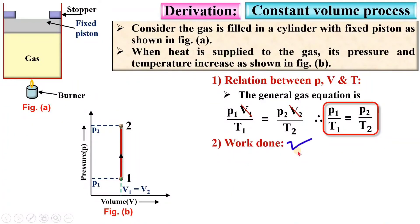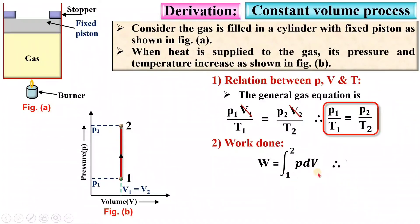The second term is work done during the constant volume process. Work done W equals the integral of P dV. Since there is no change in volume, dV = 0, and therefore W = 0.